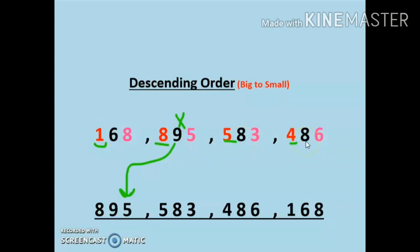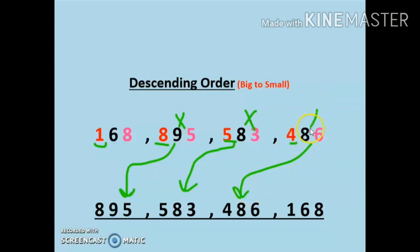Now we are left with three numbers: 1, 5, and 4. Clearly 5 is the biggest number, so I will write 583 in the second place. From 1 and 4, four is the biggest number, so I will write 486 in the third place, and 168 will come in the last place. So now these numbers are arranged in descending order — that is, big number to small number.